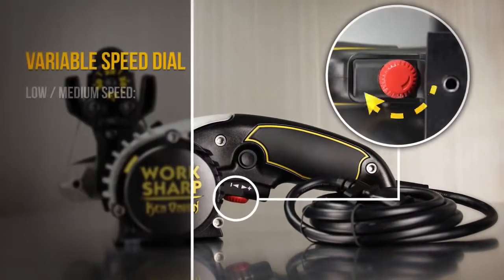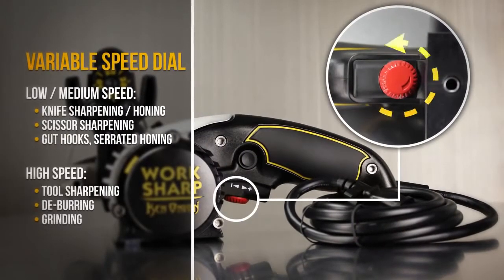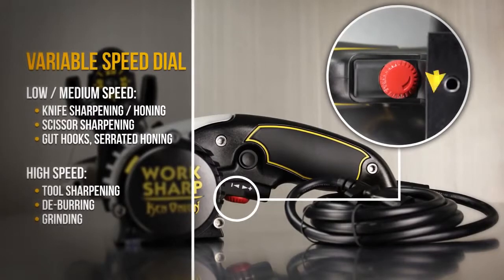The variable speed dial adjusts the belt grinding speed. Use lower speeds for knives and high speeds for tool grinding.